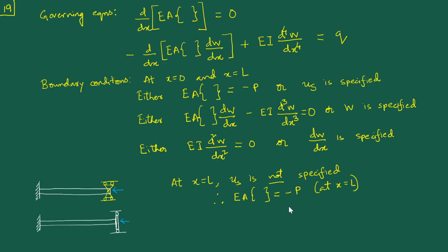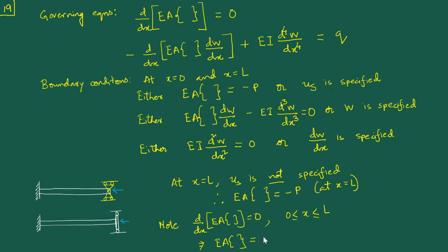Now things get very interesting. Look at the governing differential equation: we have d/dx of EA times the curly bracket equals zero. This equation is true not just at x equal to 0 or x equal to L, but over the entire domain. This means that EA times the curly bracket equals a constant for all values of x between 0 and L, inclusive.